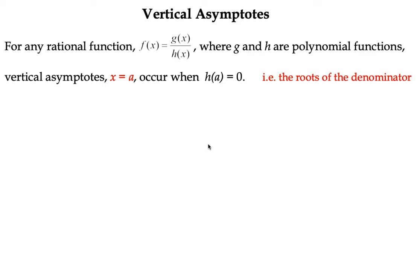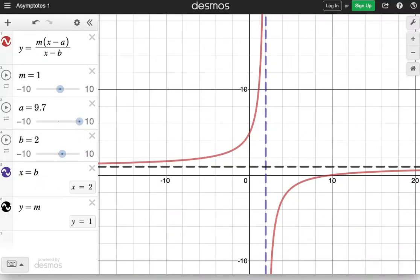So vertical asymptotes, we're going to do in example 10 and example 11. A vertical asymptote is for a rational function. A rational function is a function which has a polynomial term on the numerator and the denominator. There are going to be vertical asymptotes at times, and if you watched the previous video, you would have seen some of these graphs that I did on Desmos.